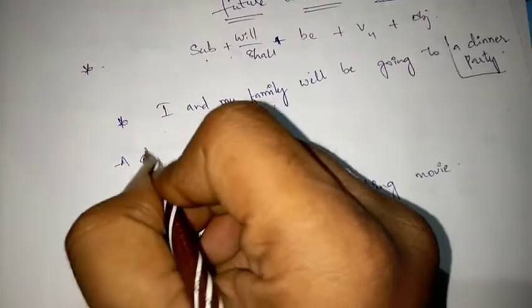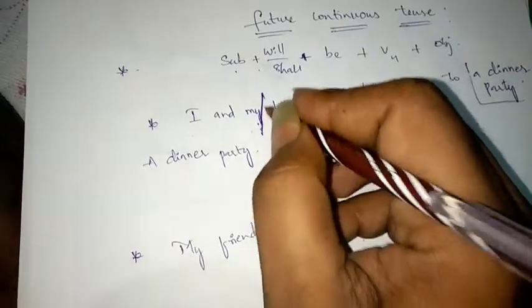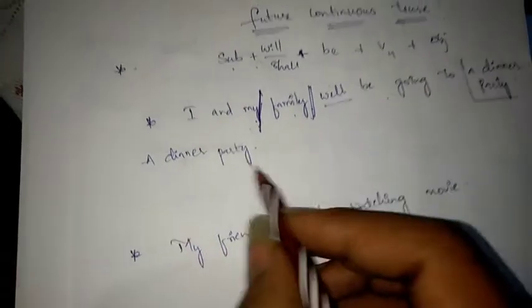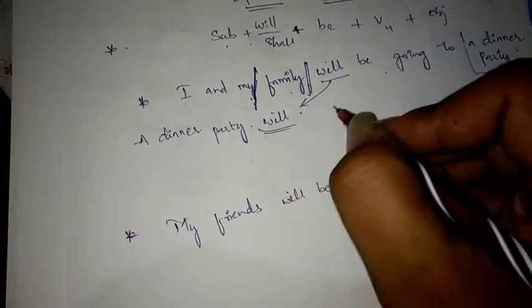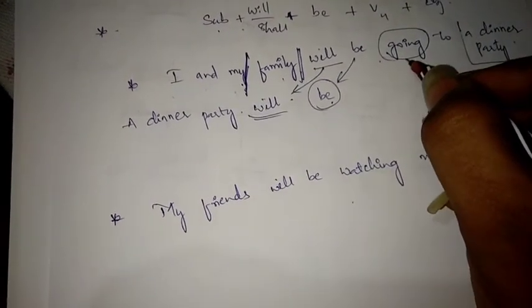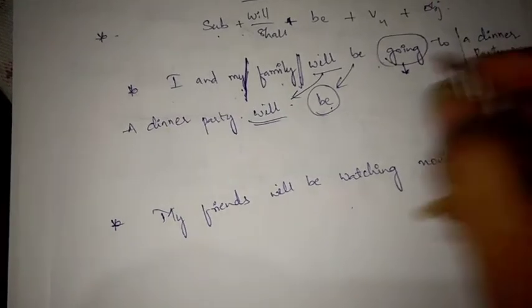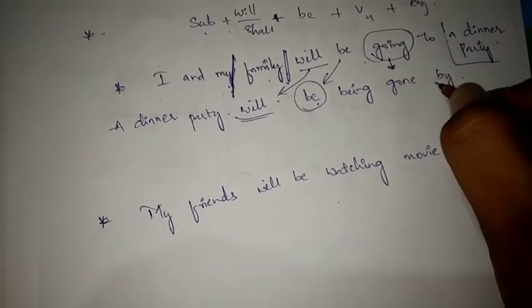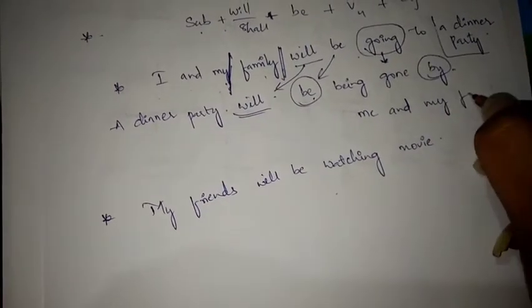For the first sentence, 'a dinner party' is the object, so it becomes the subject. The auxiliary used is 'will be'. Then converting V4 into V3 using 'being': 'A dinner party will be being gone by me and my family.'